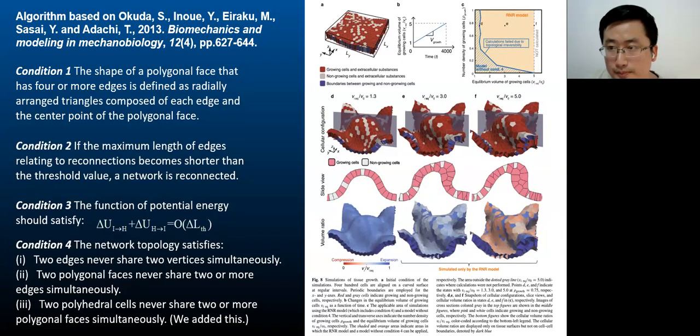Our 3D vertex model is written based on a 2013 paper. The conditions introduced in this paper should be met to ensure whether a reconnection event is physically plausible. One condition is that the change in energy before and after the reconnection event should be on the order of the threshold length LTH. Another condition relates to resolving the topological irreversibility. Two edges do not share two vertices simultaneously. Two polygonal faces do not share two or more edges simultaneously. And two polyhedral cells do not share two or more polygonal faces simultaneously. The third sub condition is implemented by us given the computational efficiency and was not discussed in the original paper.